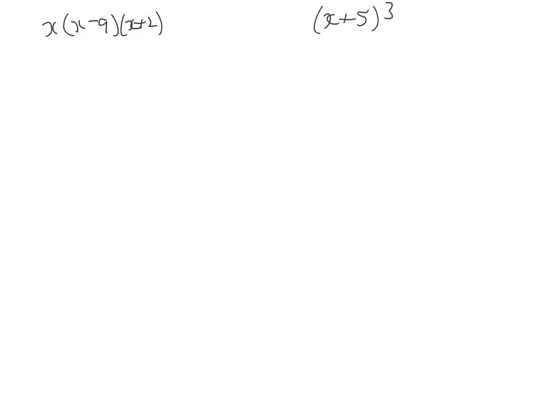Now, if we're asked to multiply polynomials or multiply functions, what we're actually doing is expanding sets of brackets. So we can think of this as three functions here: x, x minus 9, and x plus 2. Basically, we're going to expand some brackets. Same goes here. We can think of this as being x plus 5 times x plus 5, then x plus 5.